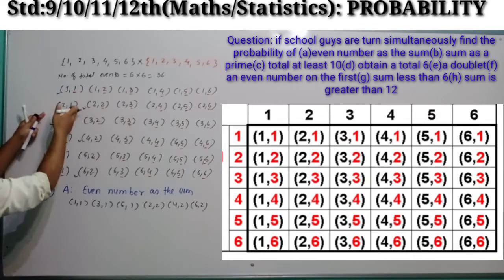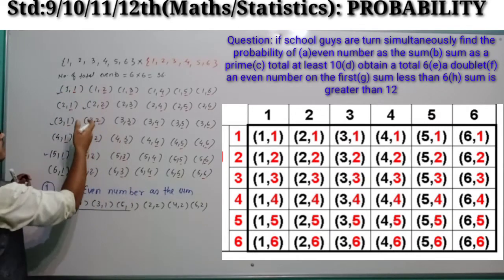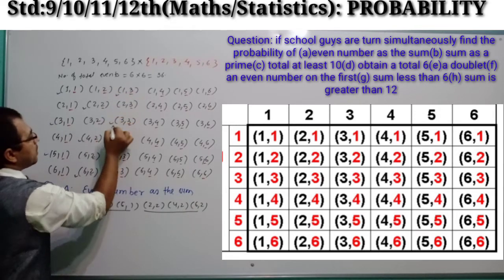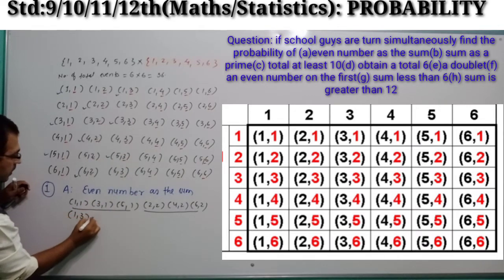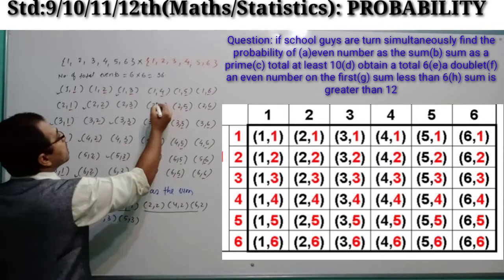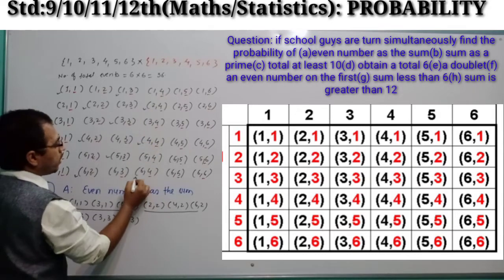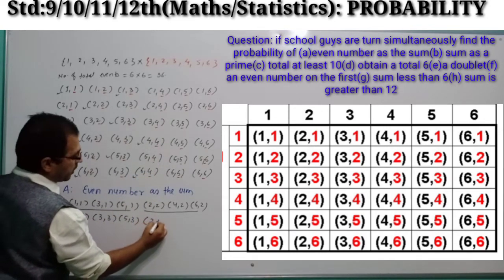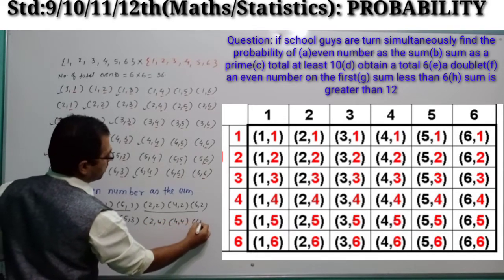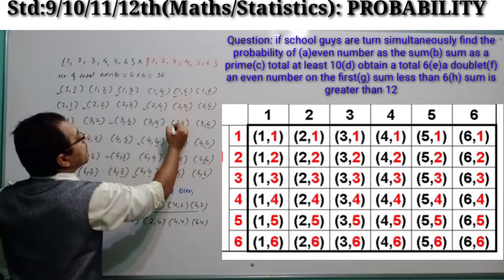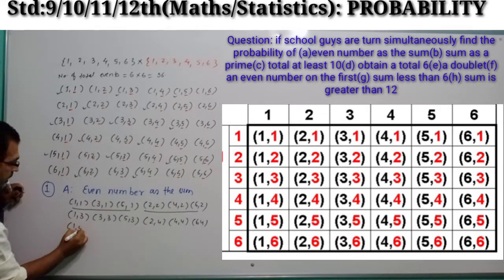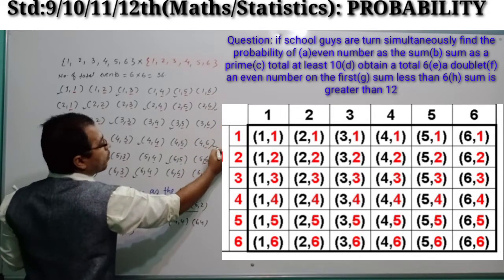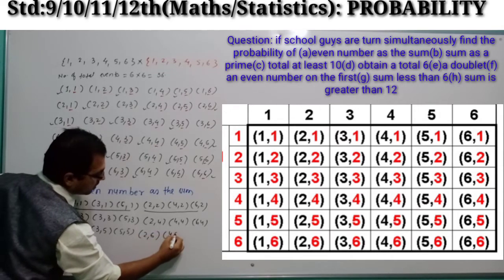Similarly, from the third column there will be 3 events: (1,3), (3,3), (5,3). From the fourth column: (2,4), (4,4), (6,4) — since 2+4=6, 4+4=8, 6+4=10 are all even. From the fifth column: (1,5), (3,5), (5,5). And finally from the sixth column: (2,6), (4,6), (6,6).